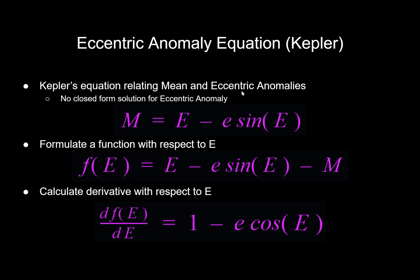In order to do that, we need to formulate a function with respect to E that we want to equal zero. All we need to do is subtract M from both sides, which makes f(E) equal to zero. We just have some function of E that we want to equal zero, and we want to find what E value is going to make this function equal to zero — and we're going to find that numerically.